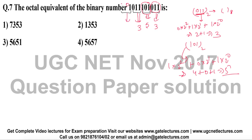The last bit is 1, so we add two extra dummy zeros, making it represent 1. Therefore, the octal equivalent of this binary number is 1353. The answer is option number 2; options 1, 3, and 4 are wrong.